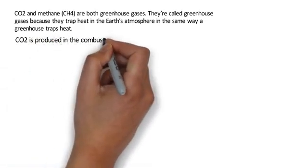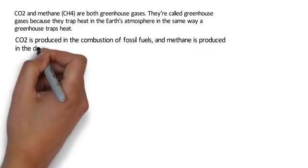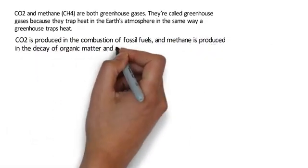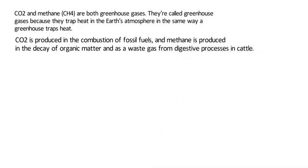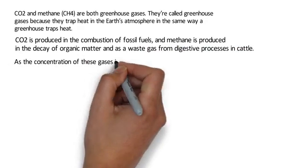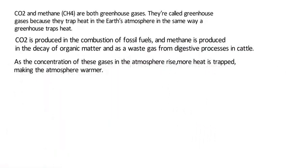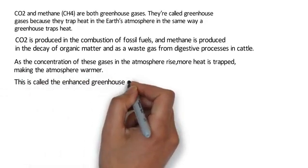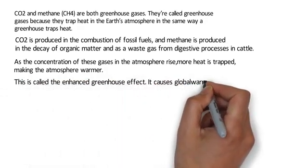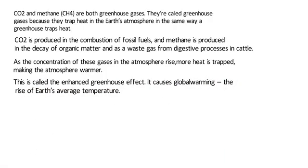CO2 is produced in the combustion of fossil fuels, and methane is produced in the decay of organic matter and as a waste gas from digestive processes in cattle. As the concentration of these gases in the atmosphere rises, more heat is trapped, making the atmosphere warmer. This is called the enhanced greenhouse effect. It causes global warming — the rise of the earth's average temperature.